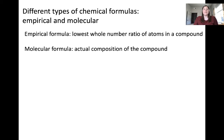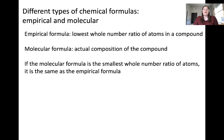Another way to express the formula of these compounds is by using the molecular formula, which is the actual composition of the compound — in other words, how many atoms of each type are actually found in that molecule. If the molecular formula is already the smallest whole number ratio of atoms within the compound, it's the same as the empirical formula.